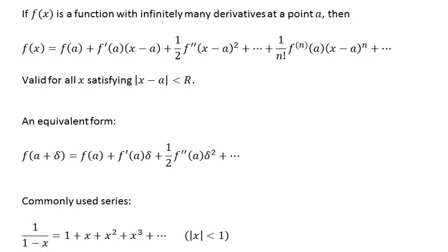If we have a function that has infinitely many derivatives at a particular point a, then the Taylor series is a power series of this form where f(x) is a sum of terms of degree 0, degree 1, degree 2, and so on. This expression as a power series in x is valid only for certain values of x.